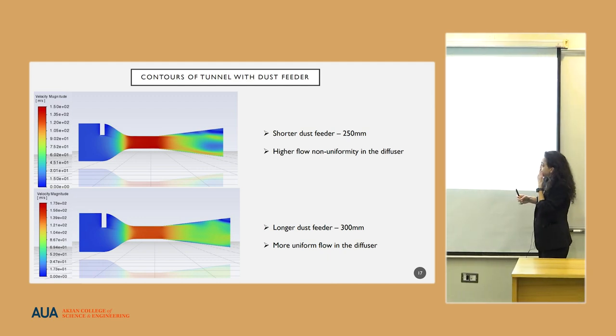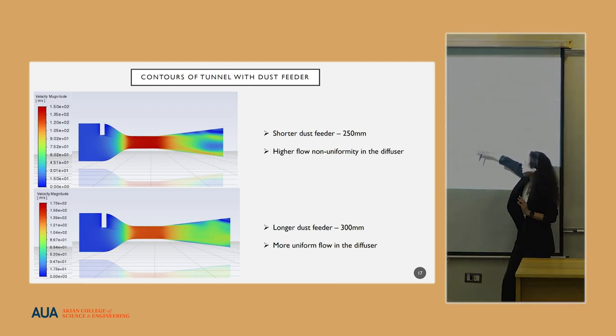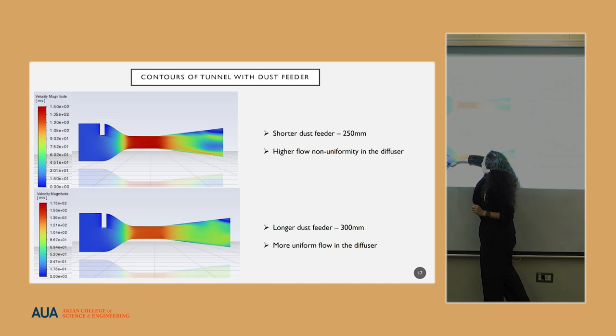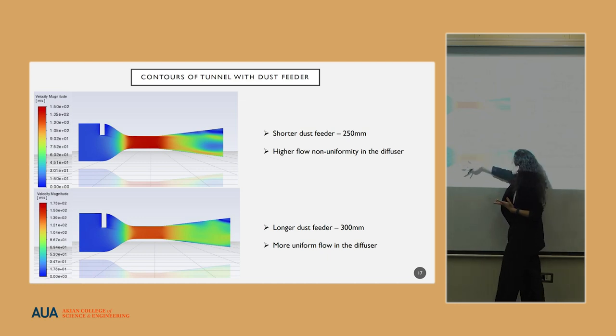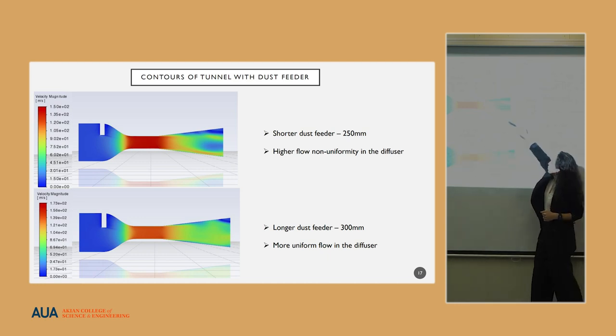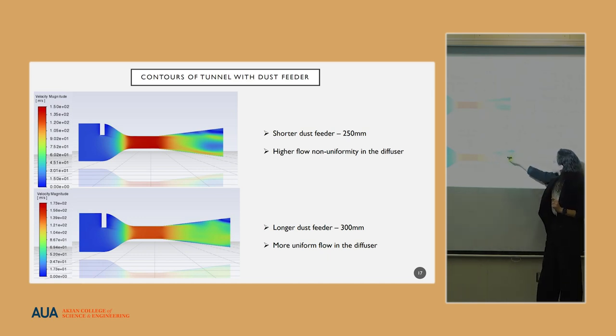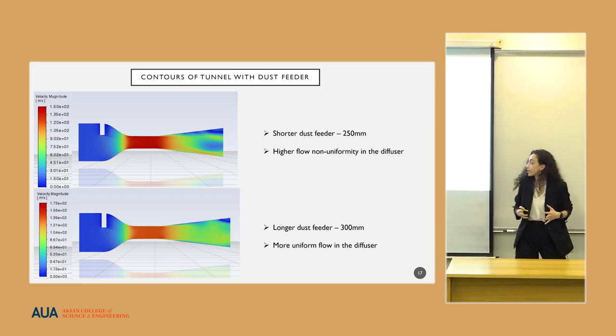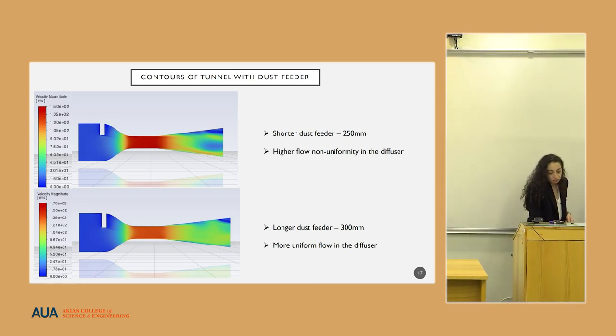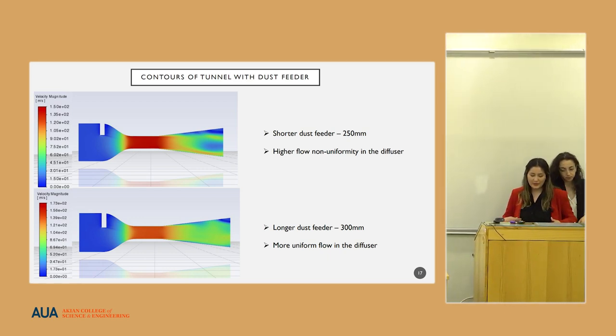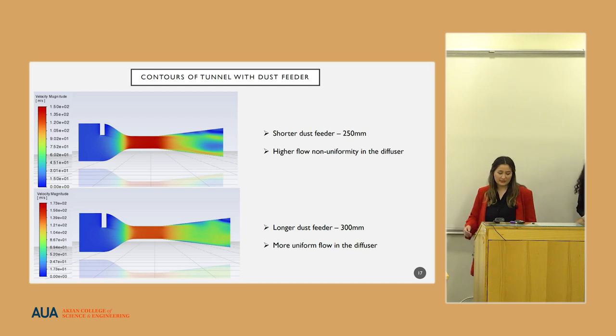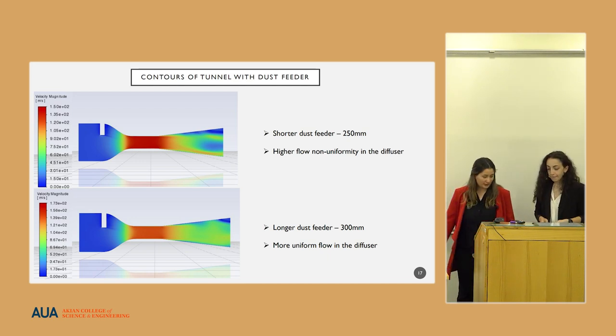Here you can see two embodiments of dust feeder properties. One is a little shorter, and the other one is a little longer length. With the first case, we have some non-uniformity in the diffuser. With the longer dust feeder, the non-uniformity is way less. Based on this result, we decided to go with the longer dust feeder.